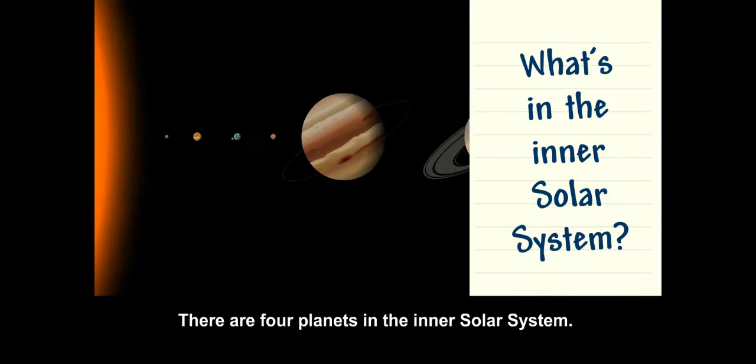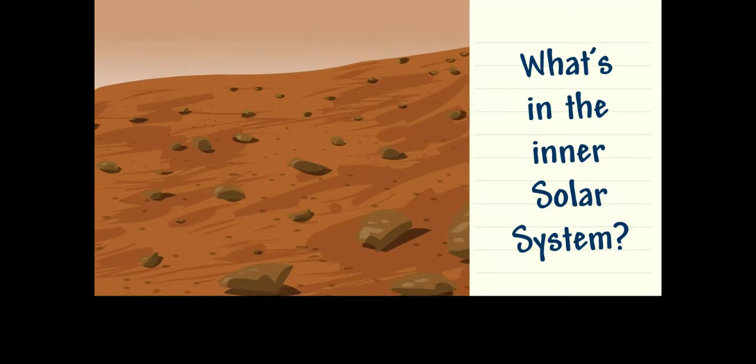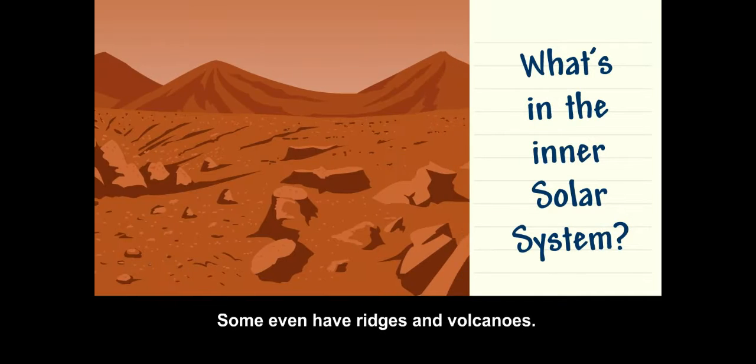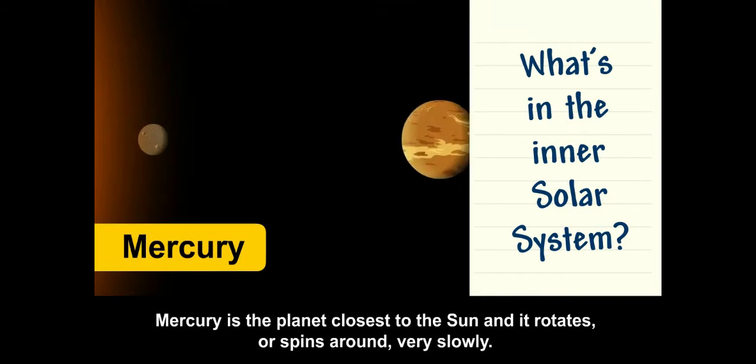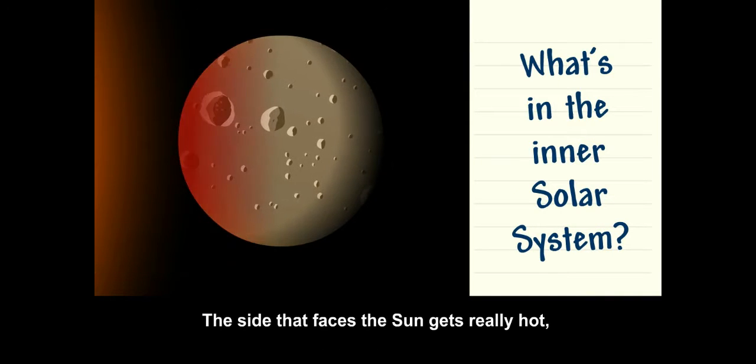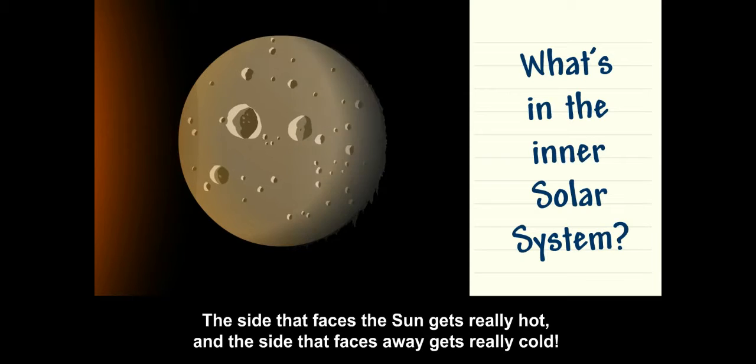There are four planets in the inner solar system. They're mostly rocky and have craters. Some even have ridges and volcanoes. Mercury is the planet closest to the sun, and it rotates, or spins around, very slowly. The side that faces the sun gets really hot, and the side that faces away gets really cold.